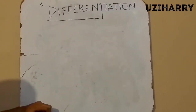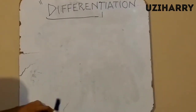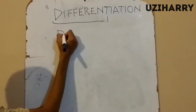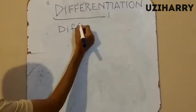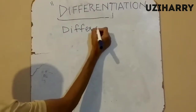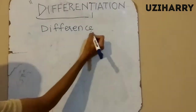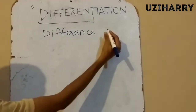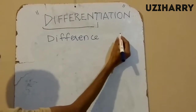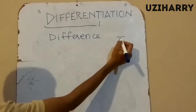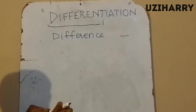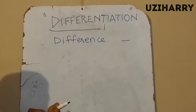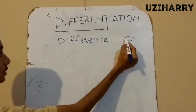Differentiation is one of the most vital topics in mathematics. It comes from the word 'different', which means difference — commonly used in mathematics. The difference can be seen through one of the four mathematical operators, which is minus, also often called subtraction. So in this topic we are going to relate to subtraction.